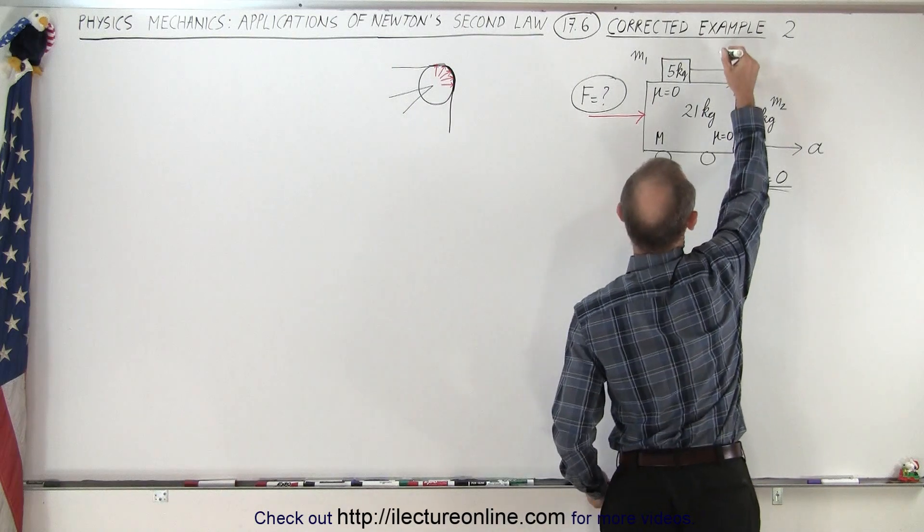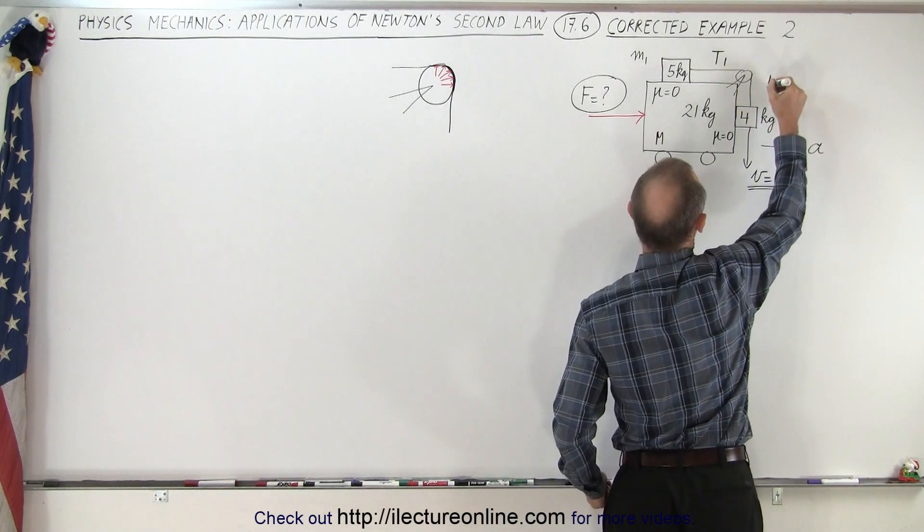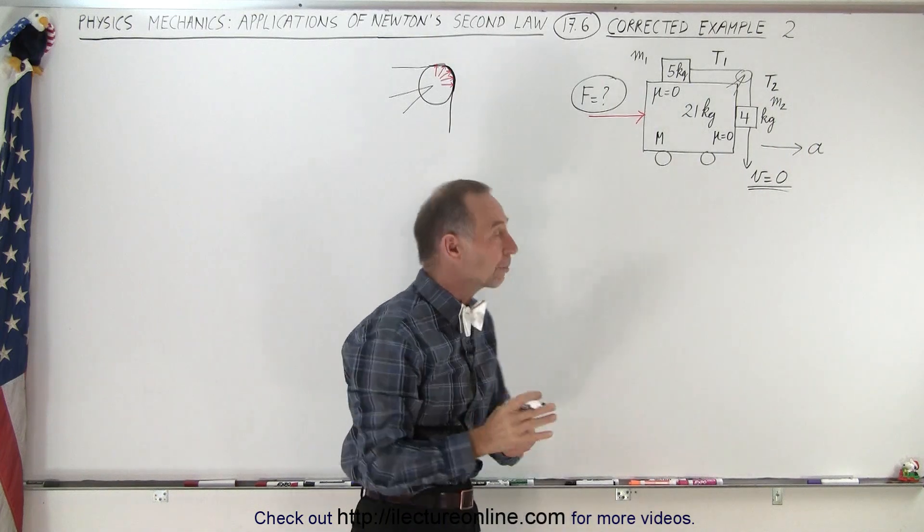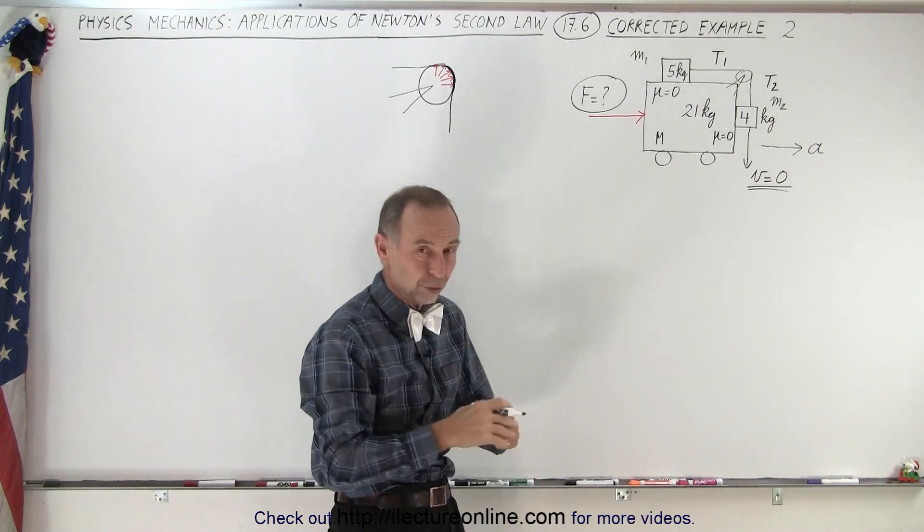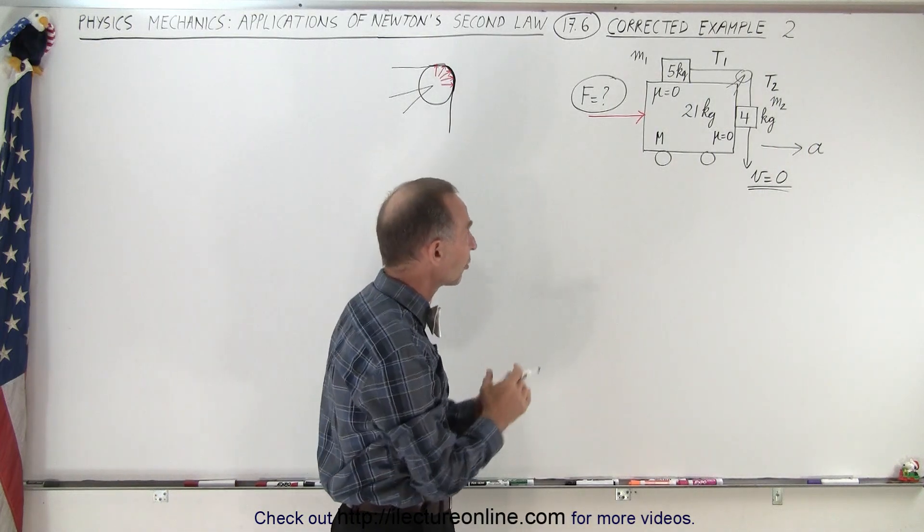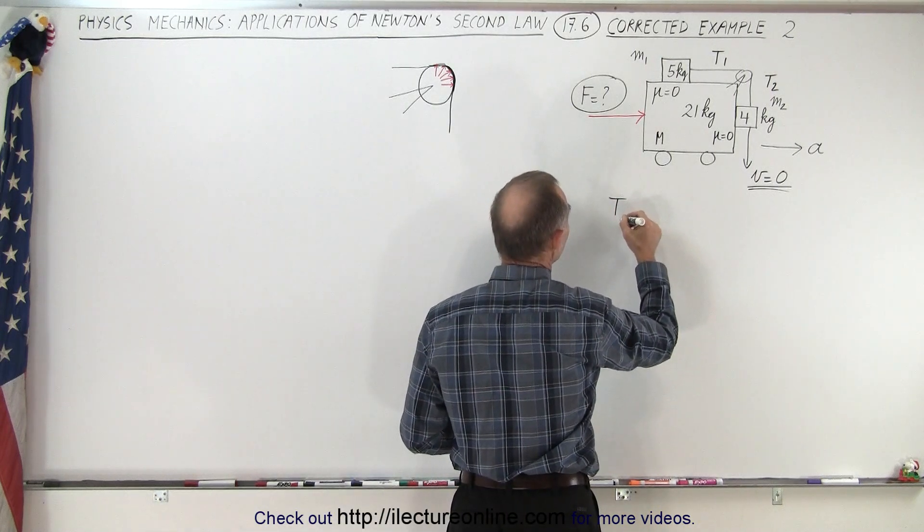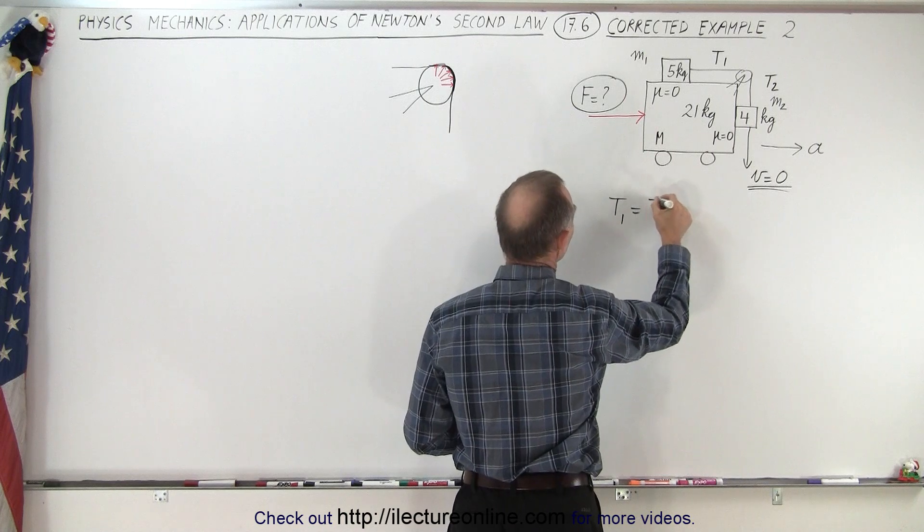First of all, this here can be called tension one and here tension two. If there's no mass to that pulley and there's no friction there, assume a massless and frictionless pulley, then those two tensions must be equal. So we could say that tension one must equal tension two.